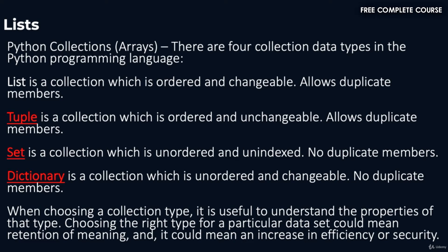There are four collection data types in the Python programming language. List is a collection which is ordered and changeable and allows duplicate members. Tuple is a collection which is ordered and unchangeable and allows duplicate members. Set is a collection which is unordered and unindexed with no duplicate members. Dictionary is a collection which is unordered and changeable with no duplicate members. When choosing a collection type, it is useful to understand the properties of that type, as choosing the right type could mean retention of meaning and an increase in efficiency or security.